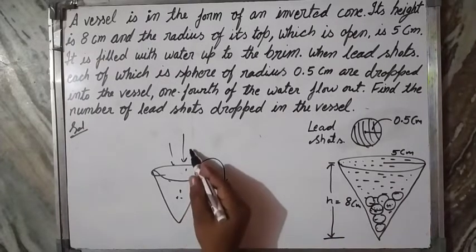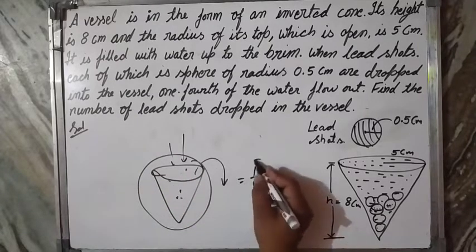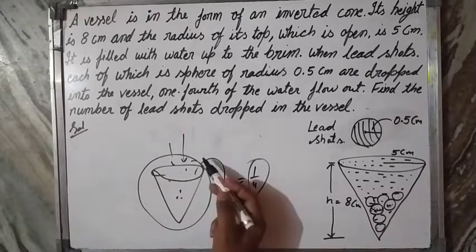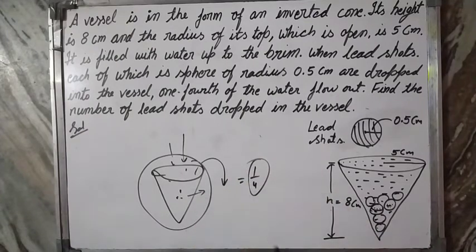You know that, what is the number of shots? What is the total volume of one by fourth? The volume of one by fourth flows out. The meaning is the volume of lead shots is equal to the volume of one by fourth. I think that your problem is clear.